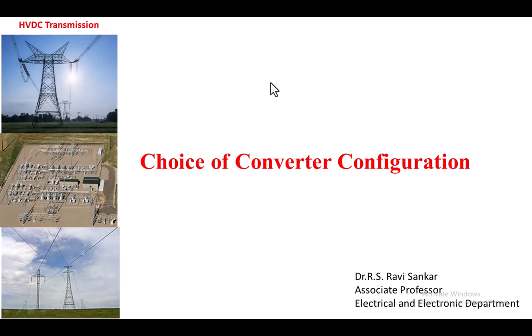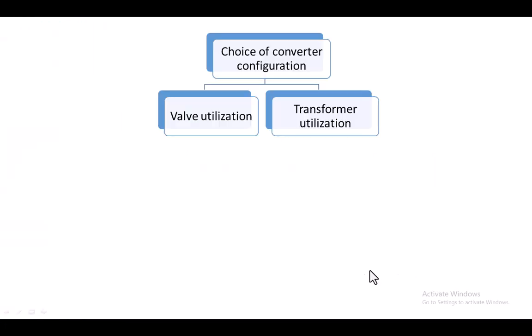Welcome back to the class on HVDC transmission systems. In this lecture we are going to discuss the choice of converter configuration. The converter configuration is decided based upon two parameters: the valve utilization factor and the transformer utilization factor. By maximizing these two parameters, we select the configuration for the converter.